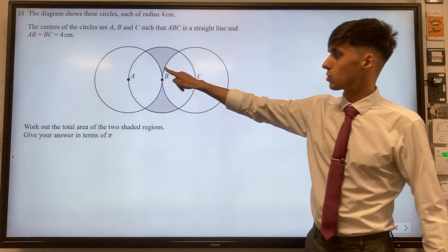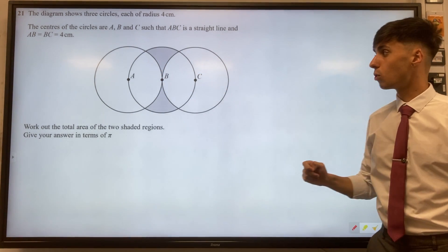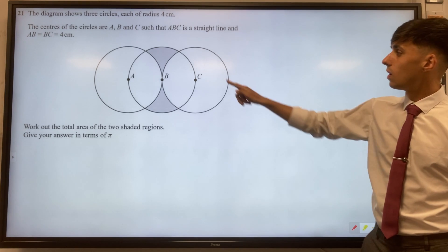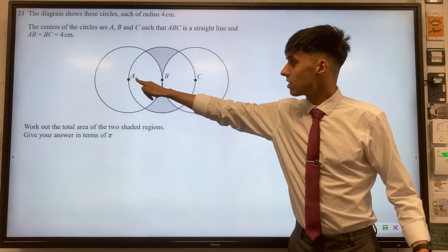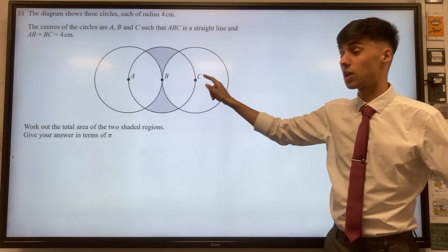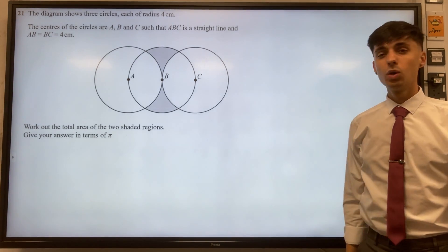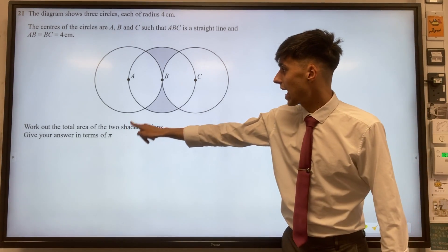We've got three circles, each of radius 4 centimeters. The centers A, B, and C are on a straight line together. What we want to do is find the area that has been shaded here.